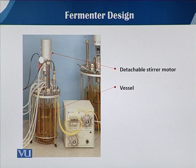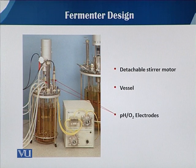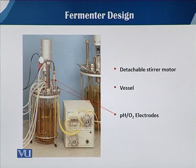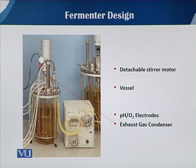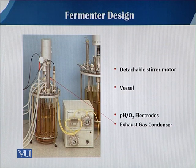You can see that this vessel is known as the body vessel, and on the upper plate there are different electrodes — a pH electrode, an oxygen electrode — and then there is a condenser from where the gas exhausts. When we have the aeration supply, the air has to exhaust, and to minimize evaporation loss we fix the condenser over the fermenter. That is why it is known as the exhaust gas condenser.